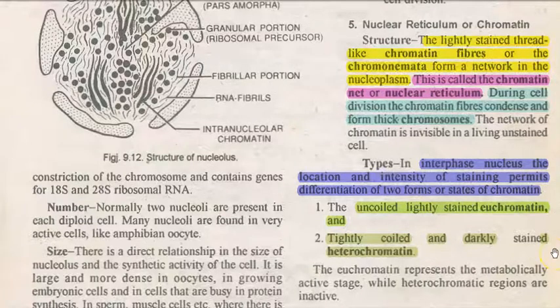In this video lecture, we will see the explanation related to nuclear reticulum or chromatin. These are lightly stained thread-like structures, called chromatin fibers or chromonema. They form into a network in the nucleoplasm structure.